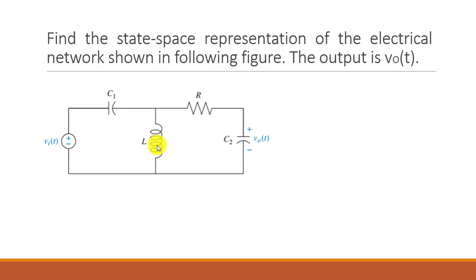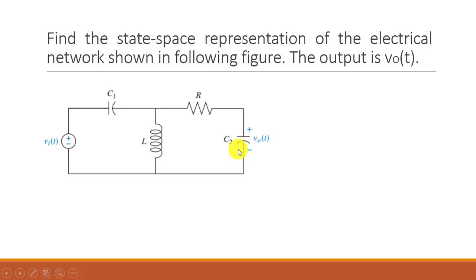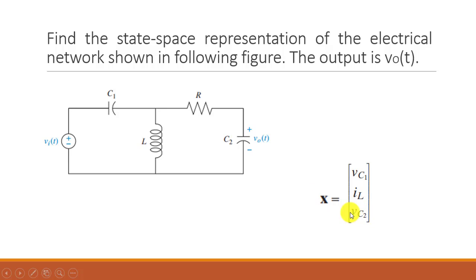Capacitors resist change across their voltages and inductors resist change in current across their endpoints. So we will have VC1, IL, and VC2 as the major components of our state space matrix. The X matrix is [VC1, IL, VC2] and X-dot would be [VC1-dot, IL-dot, VC2-dot].